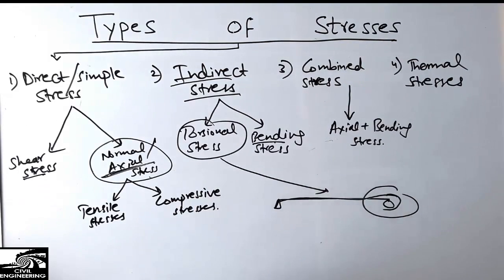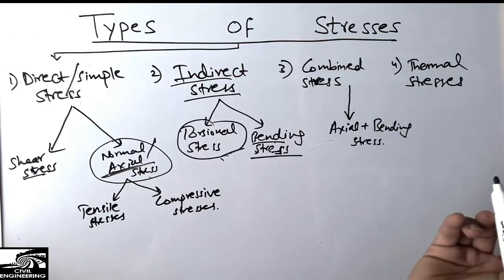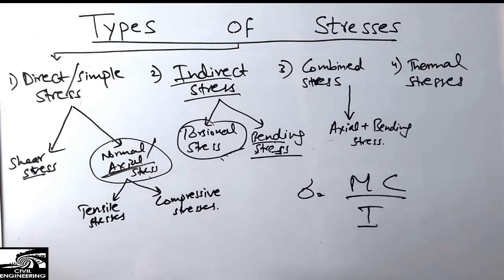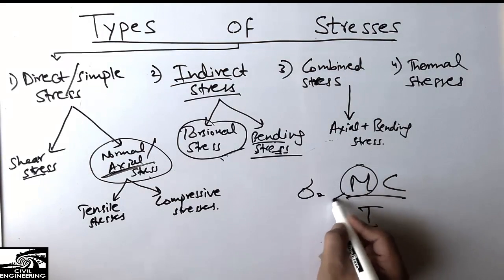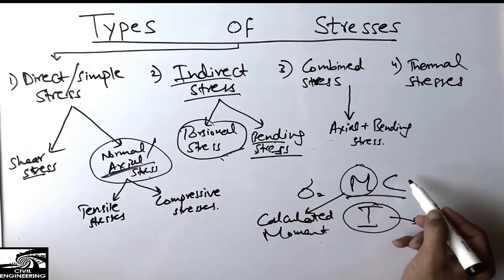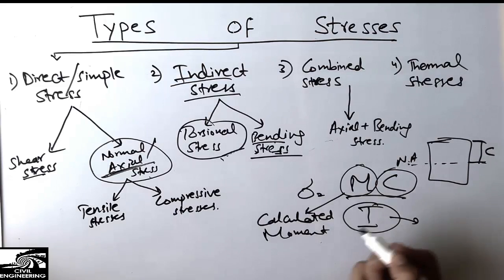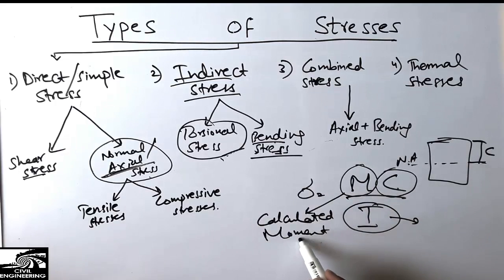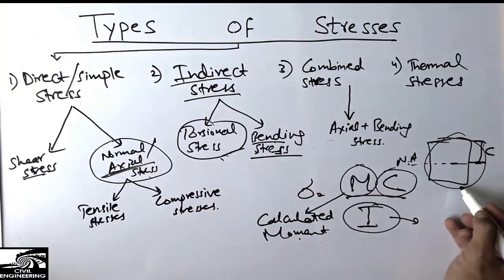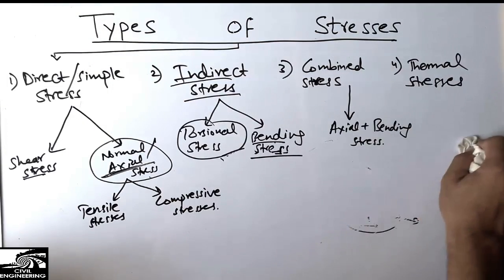Bending stress is most common in slabs and beams. The formula for bending stress is MC divided by I, where M is the calculated bending moment, I is the moment of inertia about the neutral axis, and C is the distance from the neutral axis to the extreme fiber. By knowing these three quantities — M, C, and I — you can find the bending stress at any point in the beam.